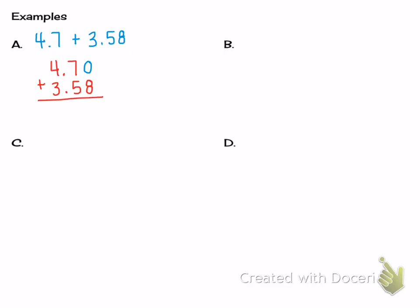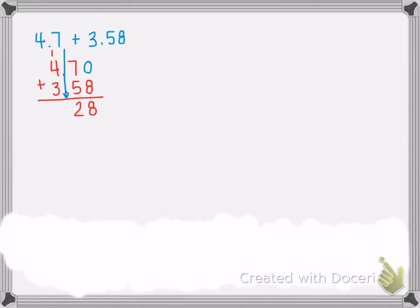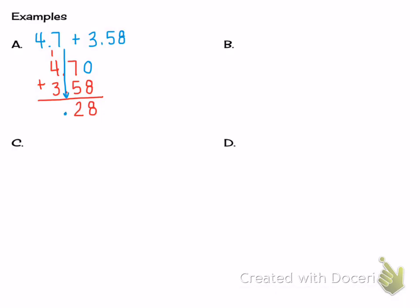Now while I'm solving this, I add 8 plus 0, which is 8, 7 plus 5, which is 12. I write the 2 and I carry the 1 over to the 1s place. I'm going to right away write my decimal into my answer because it goes straight down from the problem. And then I add the last part, which is 4 and 3, which is 7, plus 1, which is 8. So it added up to 8 and 28 hundredths. If you did not solve the problem correctly, make sure you fix your mistakes so you have good examples in your notes.